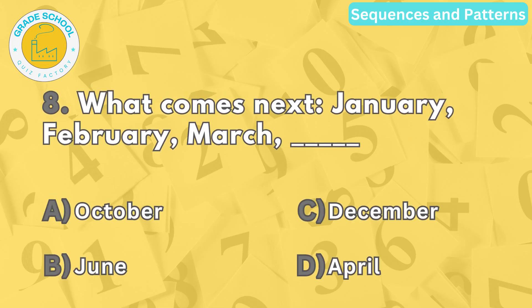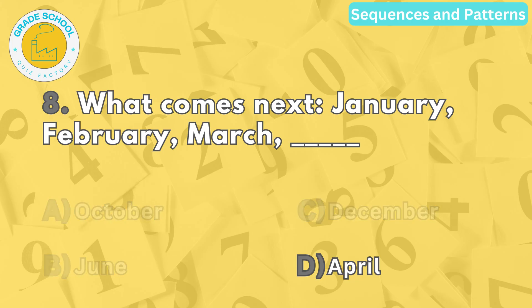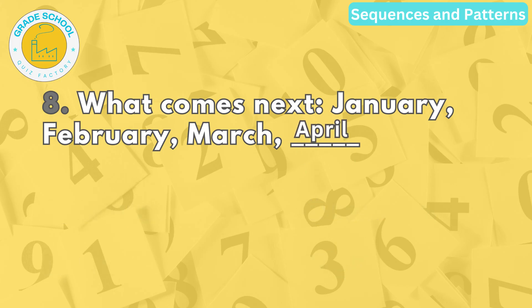Question number eight. What comes next? January, February, March, blank. The correct answer is letter D. April. The sequence follows the months of the year in order.